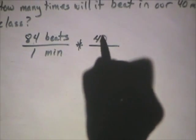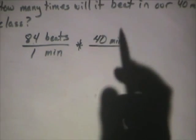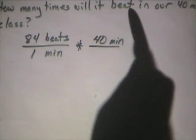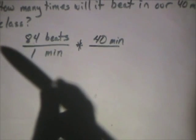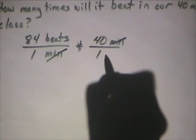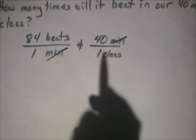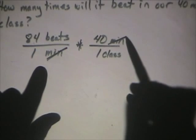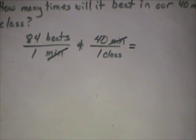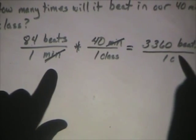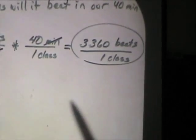Forty minutes. See, what happens here is the units act like numerical fractions. And the question is, how many times will it beat? So, beats aren't allowed to cancel, but minutes can cancel. So, we're going to have minutes canceling. And this is forty minutes for one class, right? So, that's the rate. And I'll get beats per class then. The thing that's neat is, the units will cancel just like regular fractions. So, eighty-four times forty equals sixty beats. And that's going to be per one class.